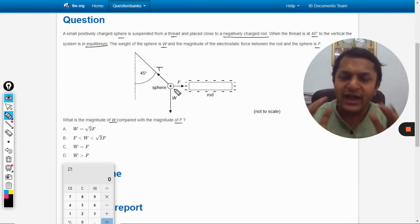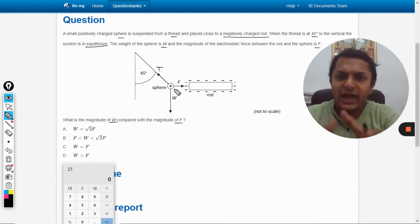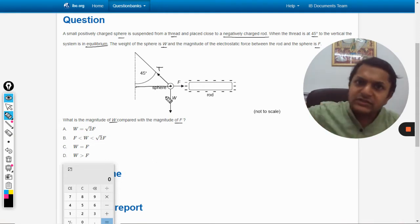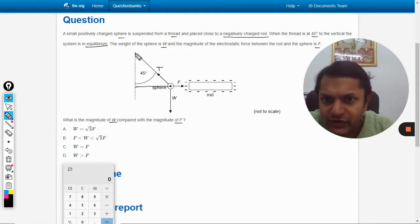we create a triangle of forces which is similar to the triangle made by the thread. This length will represent T, this force F will represent the horizontal side of the triangle, and W will be represented by the vertical side.